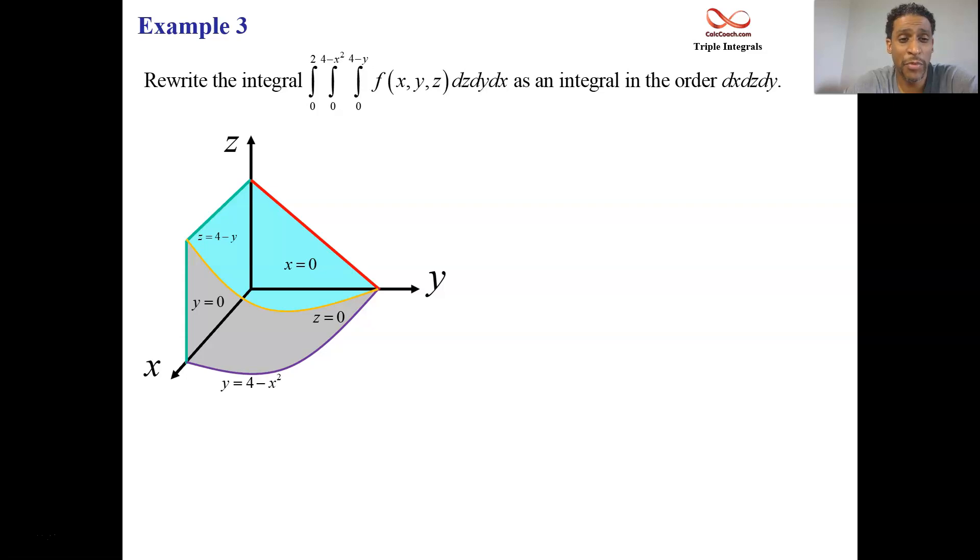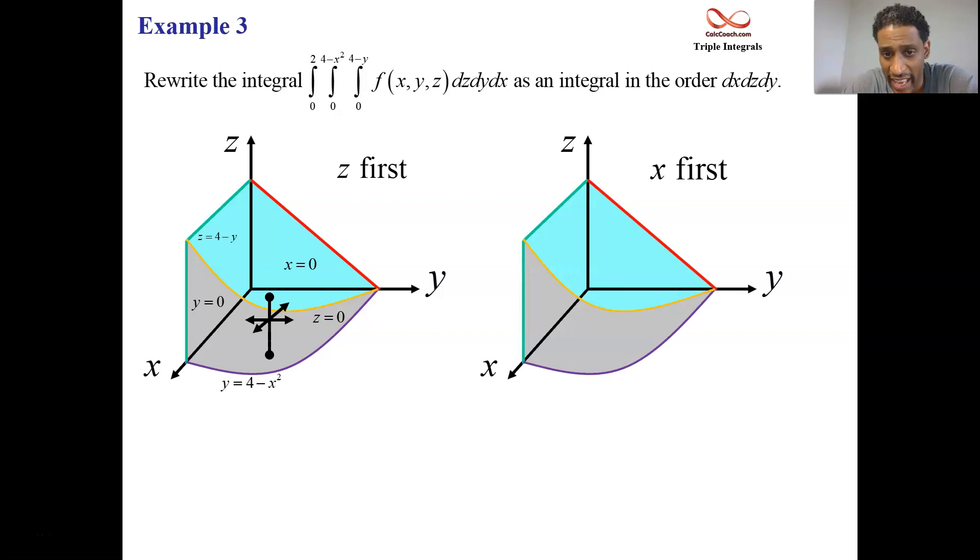We want to take this from being z first to being, according to this question, x first. So we're going to slice in a direction of the x axis. And the back is always the yz plane. X equals 0. The front is always the, it's like a wall. It's gray. It's like a wall. It's the parabola's equation, but solves for x equals.